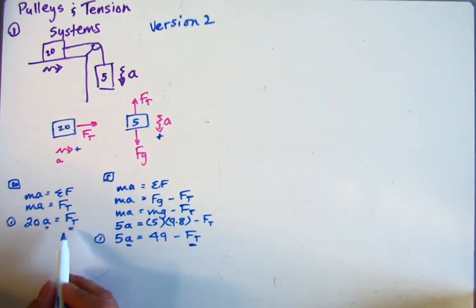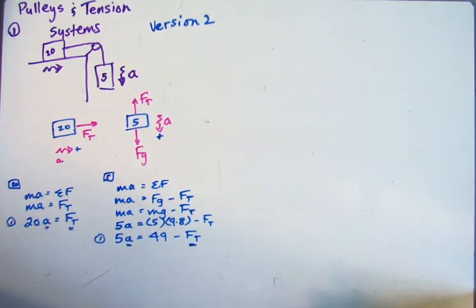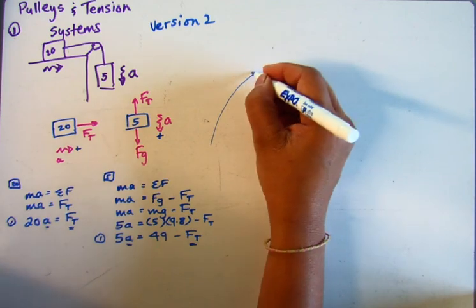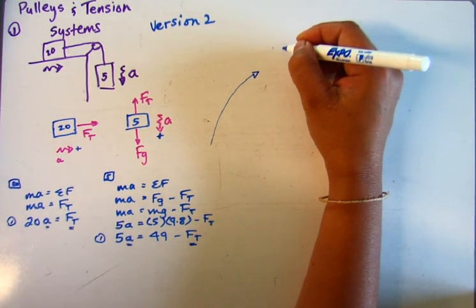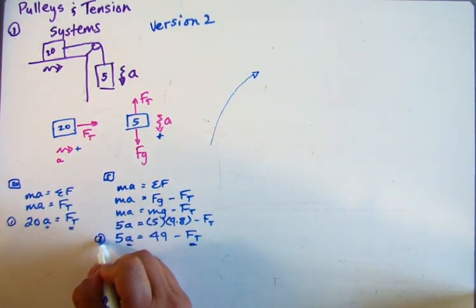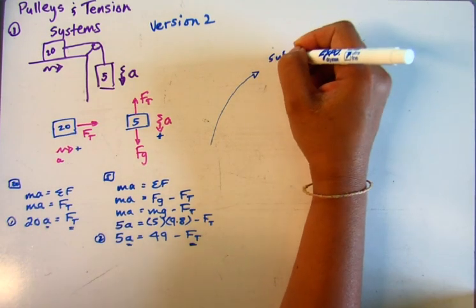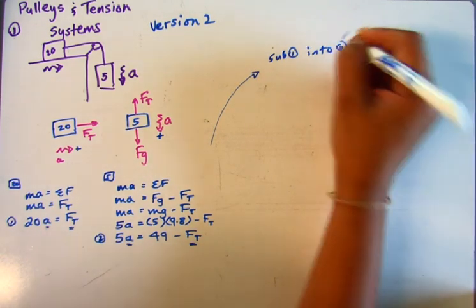So however you want to solve a system is how you would solve this. What I would do is I've got Ft equals 20A. Why don't I just sub that in here? So taking this over here, I'm going to substitute equation 1 into 2.